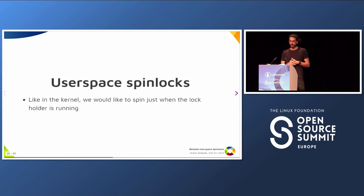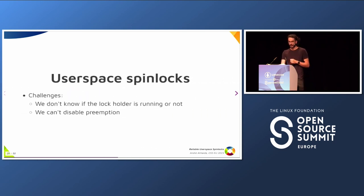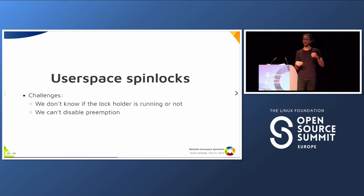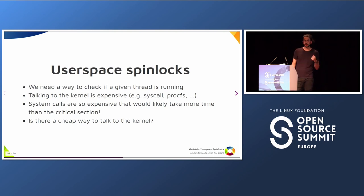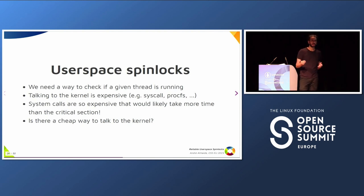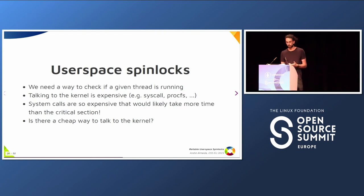So back to our problem. We would like to spin just when the lock holder is running — when we are sure the lock holder is working. But there's no current mechanism for Linux user space to ask if any given thread is actually running or not, and we can't disable preemption. So these are the challenges. We need a way to check if a given thread is running, but talking to the kernel is really expensive. If we do a syscall or add something on procfs, the context switch is very expensive — it may be far larger than the critical section itself and we are not really solving the problem. So is there a cheap way to talk to the kernel about the state of a given thread?